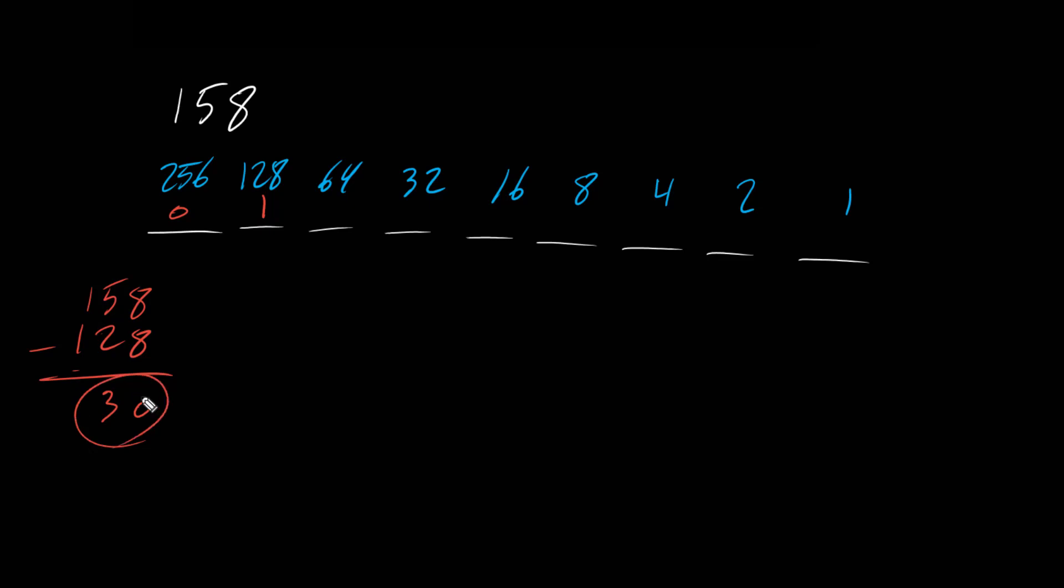Now this is our new number. Does 30 greater than or equal to 64? No it's not. If we subtract 30 minus 64 we get negative value, so we put 0. This one also, 30 is not greater than 32, so it's off. 30 is greater than 16, so it's on. What is our new value? 30 minus 16 is 14.